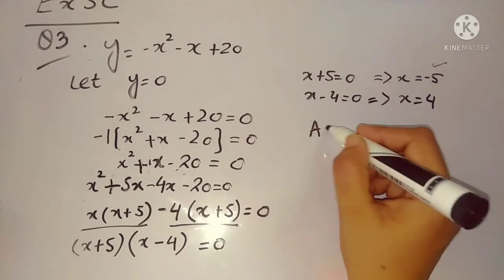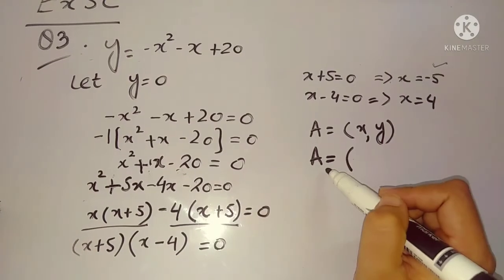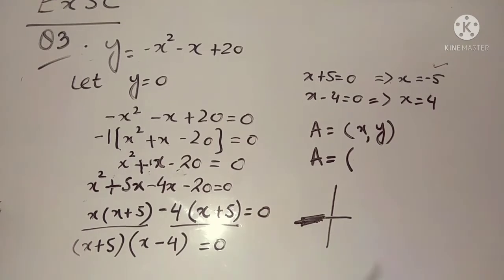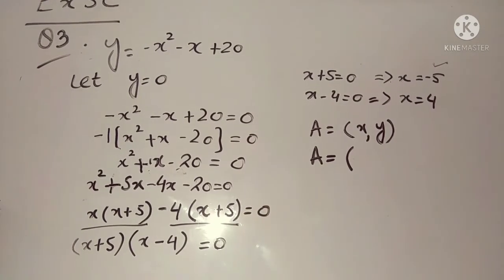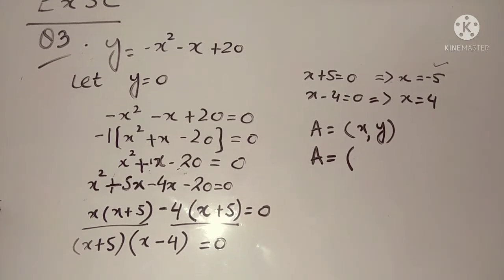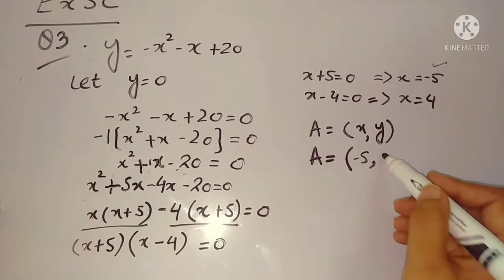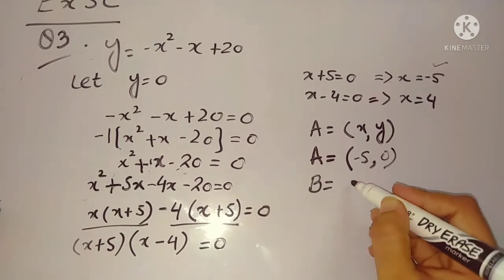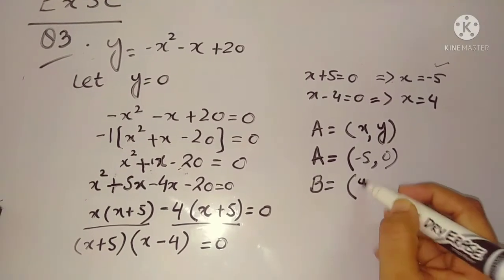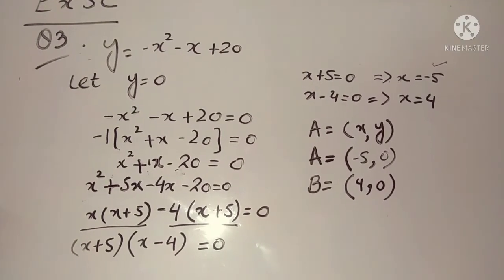After taking (x + 5) common, what is left inside is (x - 4). So the factored form is (x + 5)(x - 4) = 0. This means x + 5 = 0 or x - 4 = 0. From the first, x = -5; from the second, x = 4. So the values of x are -5 and 4, which give the coordinates of A and B.